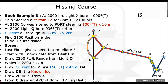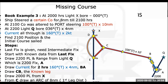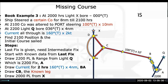At 2000 hours the light X bore 000 degrees. The ship steered a certain course for 8 nautical miles till 2100. Then at 2100 the course was altered to port and the ship steered 100 degrees true for 10 nautical miles. At 2200 light Q bore 0000 at 4 nautical miles.